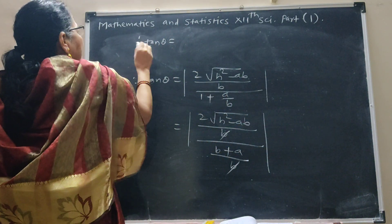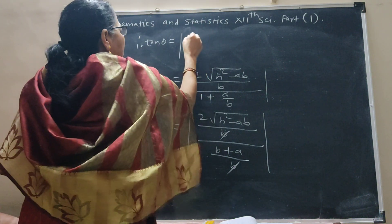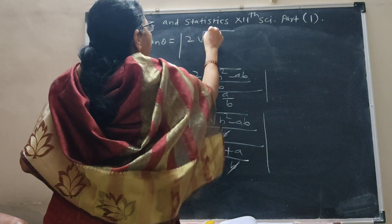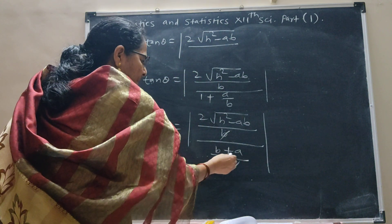Therefore, tan theta is equal to 2 root h square minus ab upon a plus b.